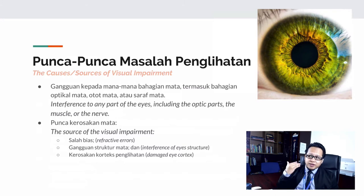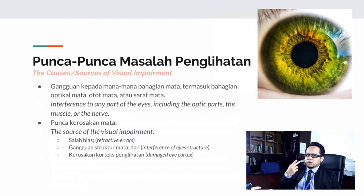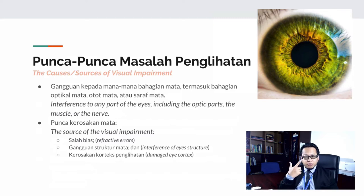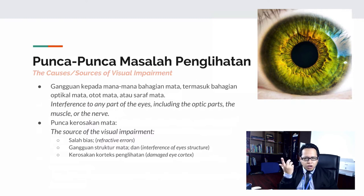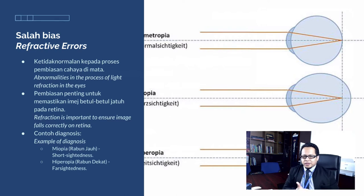Our vision can be affected if there is interference to any internal part of our eyes — for example, the optic parts or the nerves connecting the eyeballs to our brain. If any interference happens on the optic nerves or the lens, we have visual impairment. One source of visual impairment is refractive errors, which relates to the optics of our eyes or the size of our eyeballs, and damage to the eye cortex.